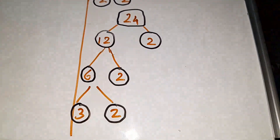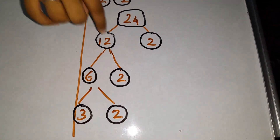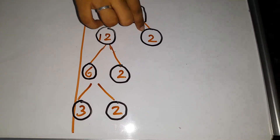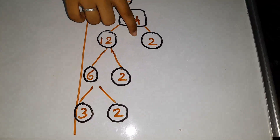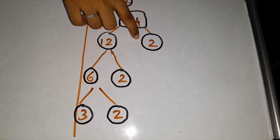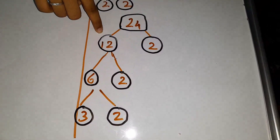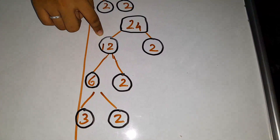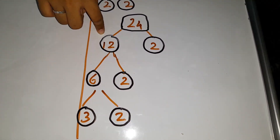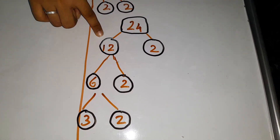Now we are going to see the third way. 12 times 2 equals 24. 2 is a prime number, so we have to stop there. But 12 is not a prime number, so we can factorize 12 further.